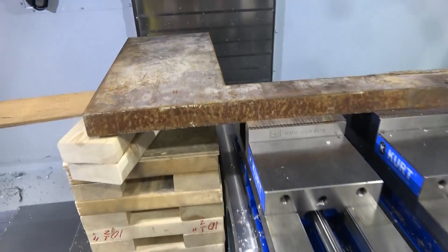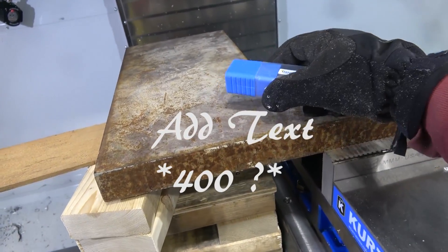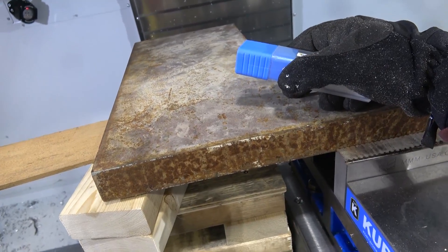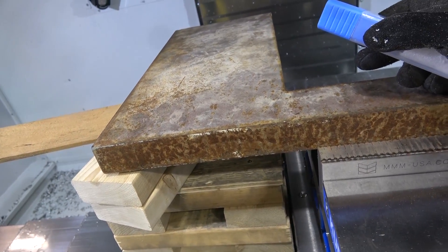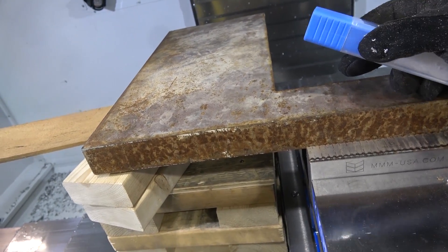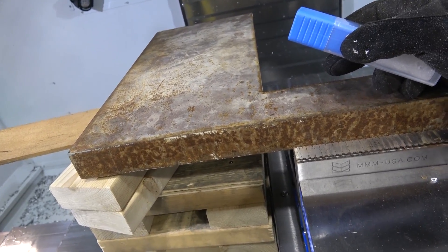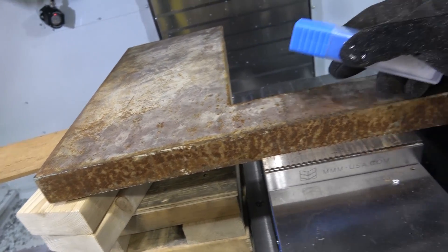Recall in the previous video this AR500 plate. Abrasion resistant. 500 hardness on the Brinell scale which equates to about Rockwell C50. About 50. It's through hardened. She's tough as a Russian winter and just as mean.